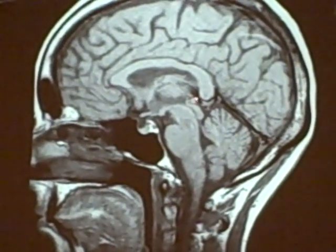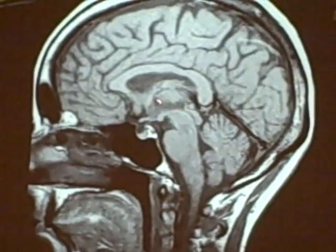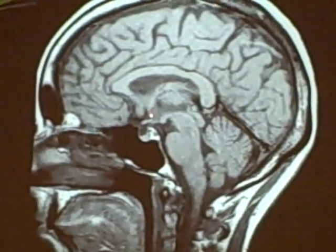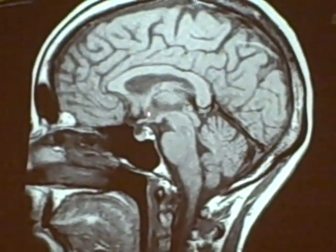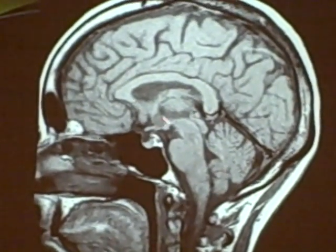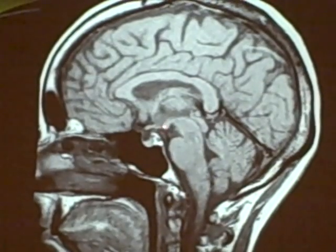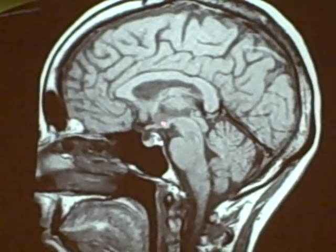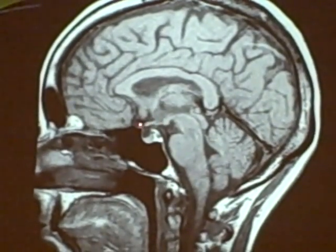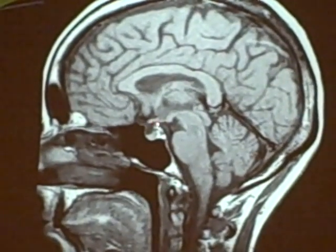The pineal gland would be right in here, but it doesn't show up that well. This is the thalamus, and this area right in here is the hypothalamus. We've pointed out several times all the things around the hypothalamus — mammillary bodies, which really are a part of the hypothalamus, and the optic chiasm right here.